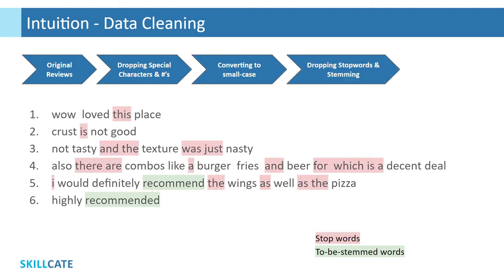Moving on, as the third step, we would do a couple of things. All words highlighted in red here are called stop words, which generally are non-value-adding. These words mostly do not help us in understanding sentiment for a review, so we would drop these. Also, the words highlighted in green depict how the same dictionary word 'recommend' is used in different forms but has the same sentiment. To ensure the computer understands these as the same word, we would convert all English words to their root. This process is called stemming.